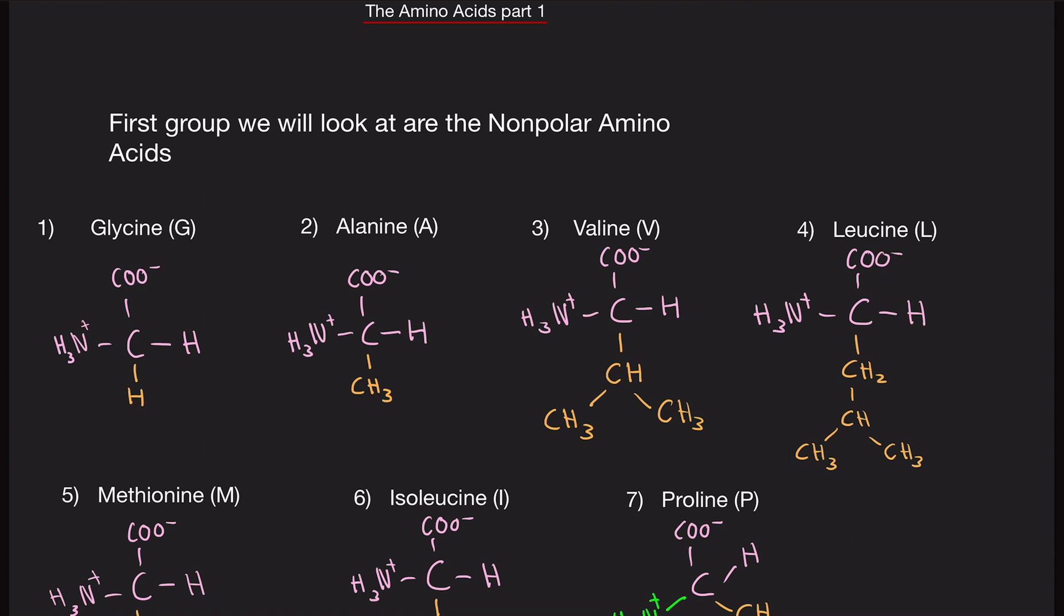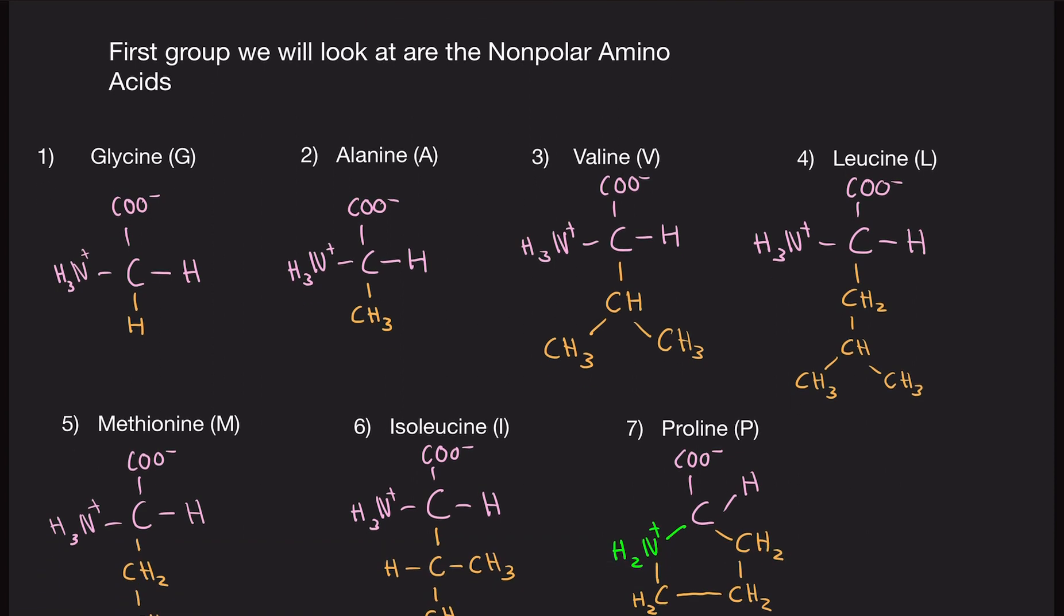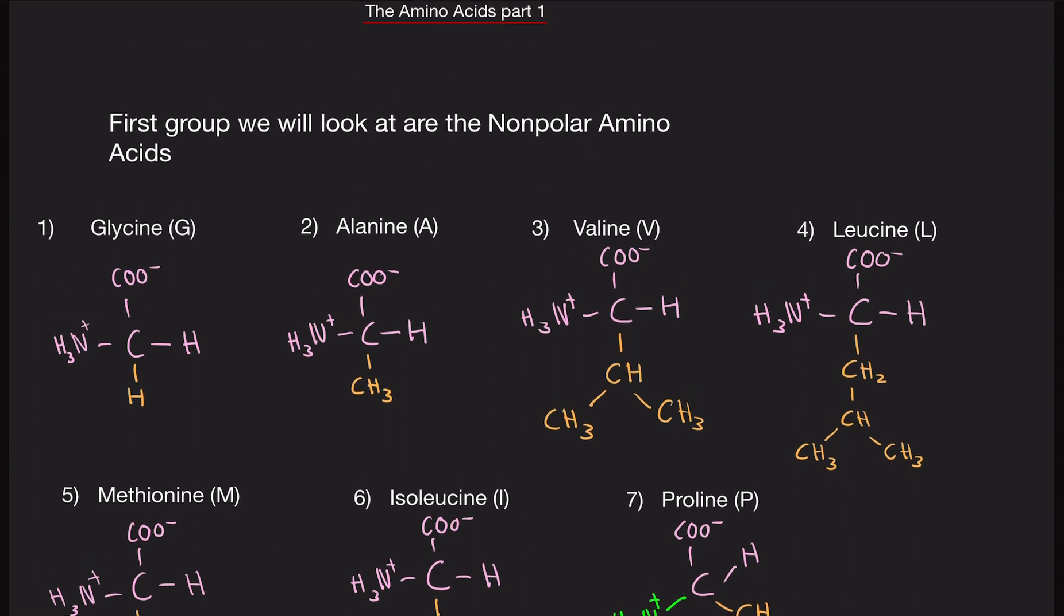So these are the first seven nonpolar amino acids. Glycine, alanine, valine, leucine, methionine, isoleucine, and proline. If you found this video helpful, please like, subscribe, and turn that notification bell. Until next time, later.